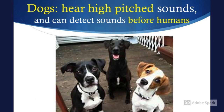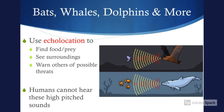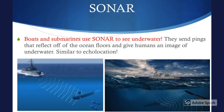Dogs can hear high-pitched sounds and can detect sounds before humans. Bats, whales, dolphins, and more use echolocation to find food or prey, see their surroundings, and warn others of possible threats. Humans cannot hear these high-pitched sounds. Boats and submarines use sonar to see underwater. They send pings that reflect off the ocean floor and give humans an image of underwater, similar to echolocation.